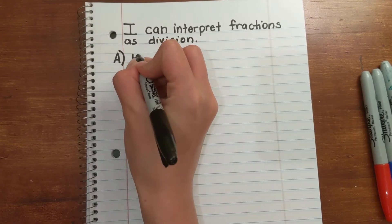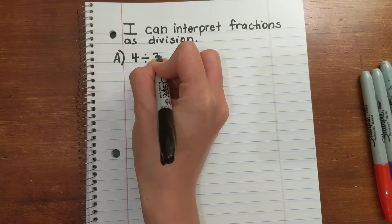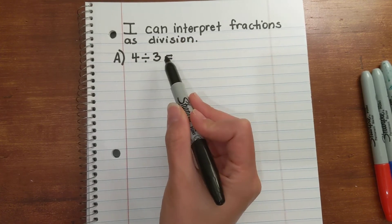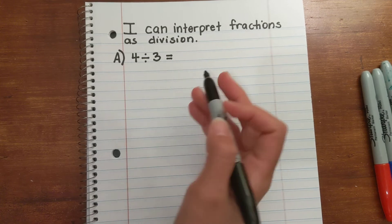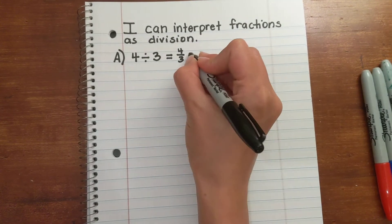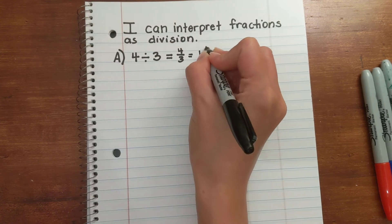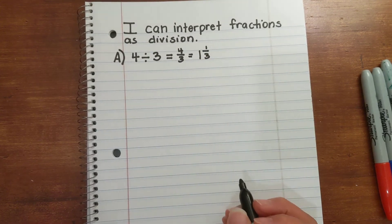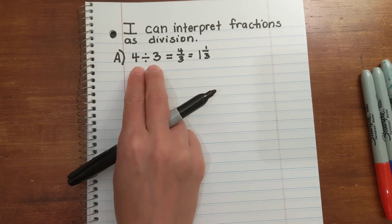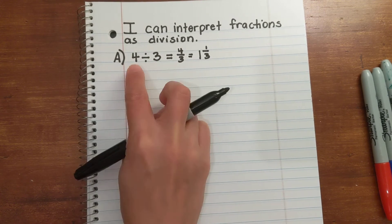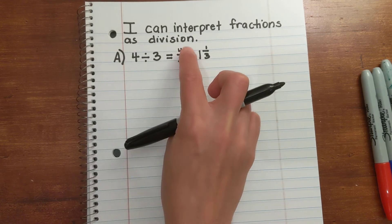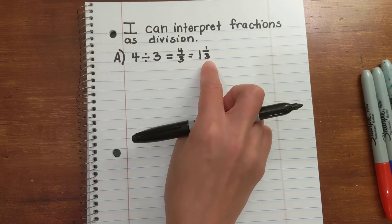Let's try something simple to start. 4 divided by 3 is equal to 4 thirds. We can rewrite 4 thirds as 1 and 1 third. This division expression can be rewritten as a fraction — 4 divided by 3 is the same thing as 4 over 3, or 4 thirds, which is also equal to 1 and 1 third.